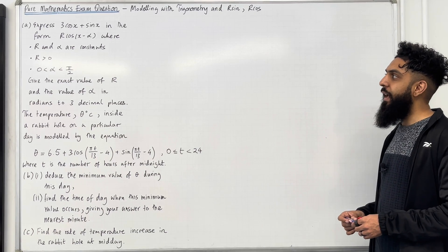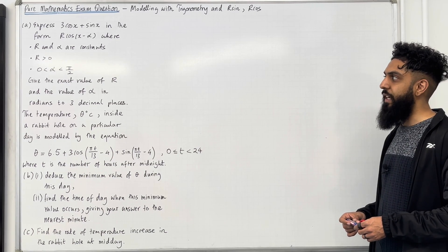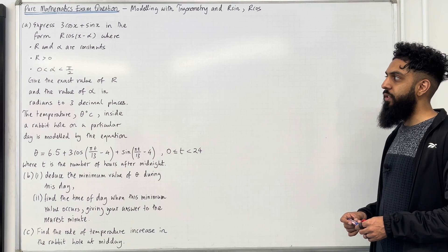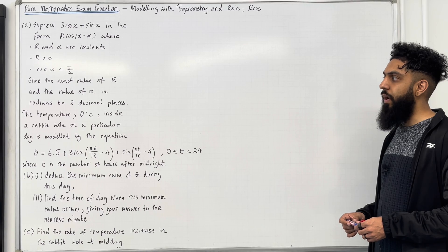Part A: express 3 cos x plus sin x in the form r cos(x minus alpha), where r and alpha are constants, r is greater than 0, and alpha is between 0 and pi over 2. Give the exact value of r and the value of alpha in radians to three decimal places.